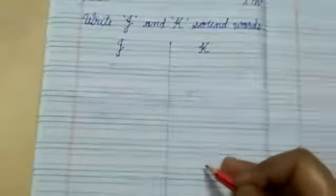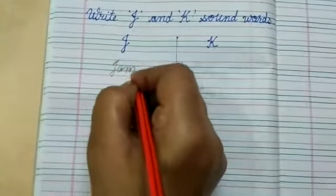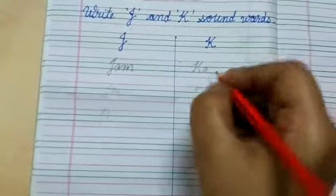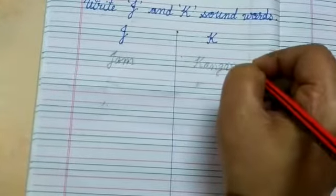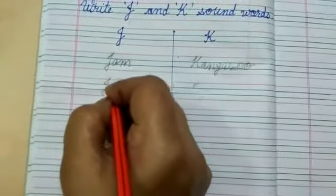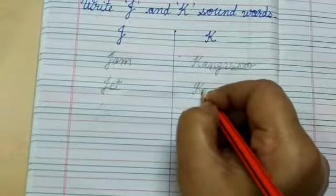J का 5 sound words लिखना है और K का 5 sound words लिखना है. जैसे J A M jam और K A से K A N G A R O कंगारू. J E से क्या बनेगा? J E T Z और K E Y की.